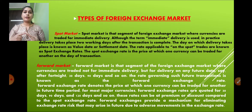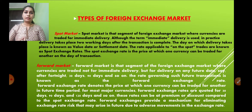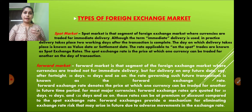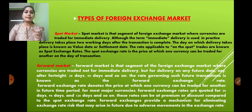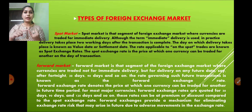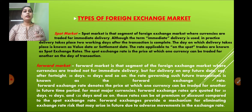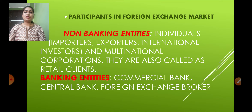The forward market is a market where the currency is traded at some future date — that date may be 14 days, 30 days, 60 days, or 90 days. The rate at which the transaction takes place in the forward market is called the forward exchange rate. So, spot market involves immediate transactions and forward market involves transactions at a future date.